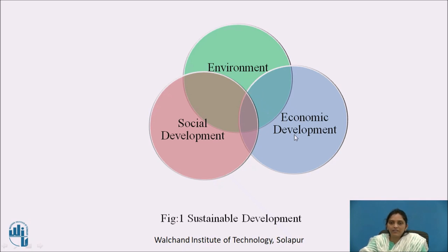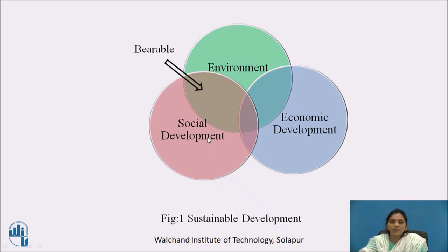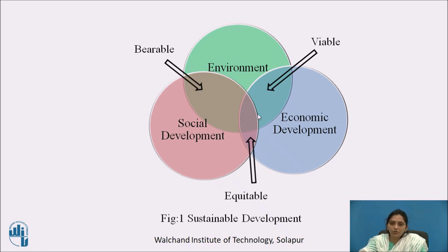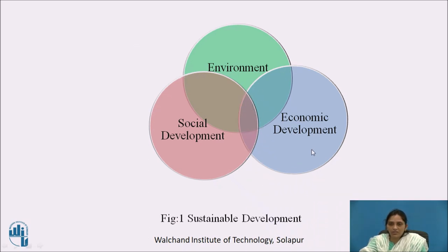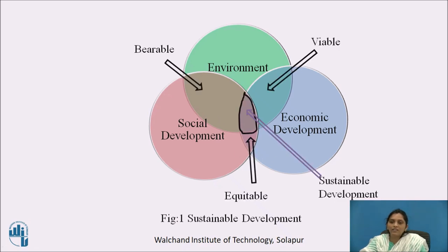These three — environment, economic development, and social development — are the pillars of development. Development in favour of environment and social development is called bearable development. Development which is environment-friendly and in favour of economic development is called viable development. Development which is in favour of social and economic development only is called equitable development. The balance of all three is a very difficult and critical task, and the development which balances all three is called sustainable development.